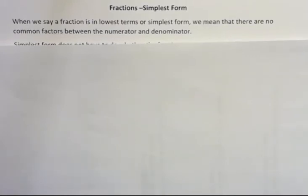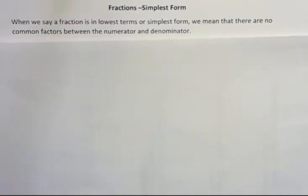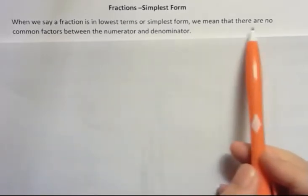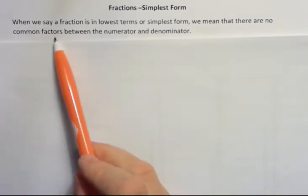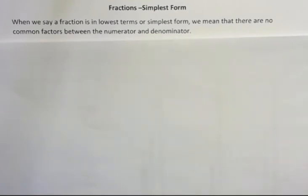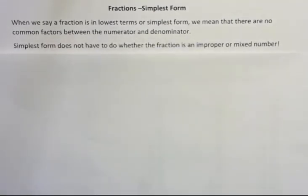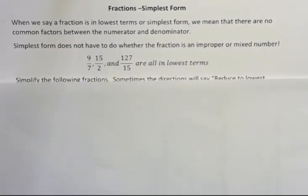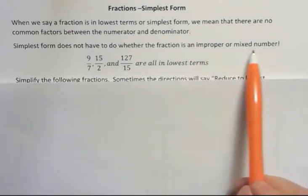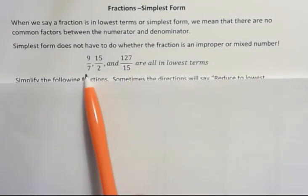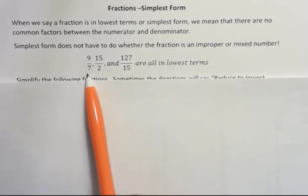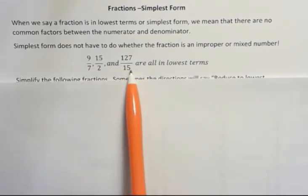Also, somebody might say reduced to lowest terms. It means the same thing. We mean that there are no common factors between the numerator and the denominator. Simplest form does not have to do with whether the fraction is an improper or a mixed number. These are all in lowest terms or simplest form: 9 sevenths, 15 halves, 127 over 15.